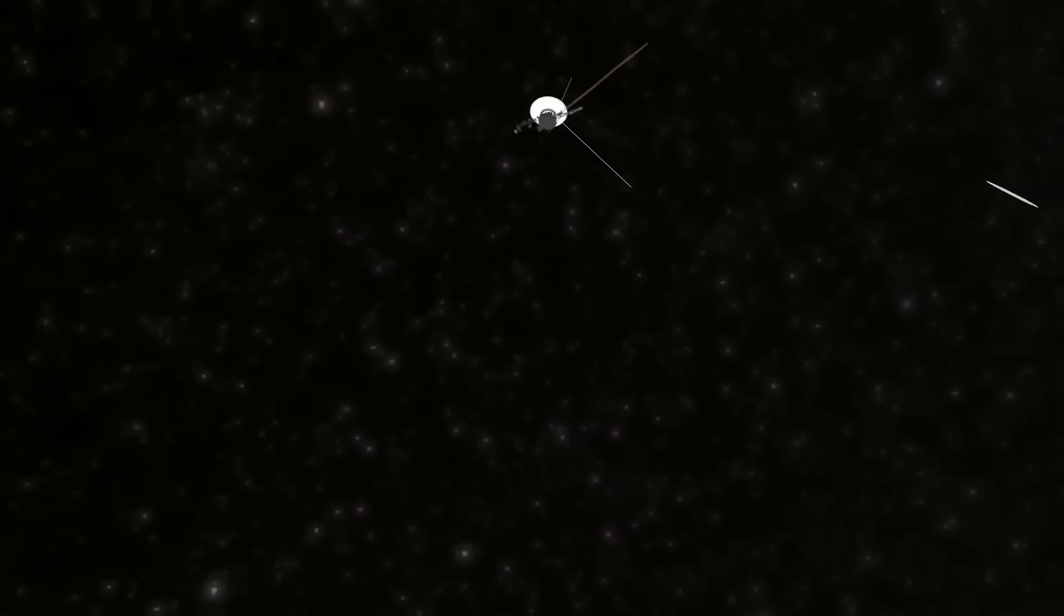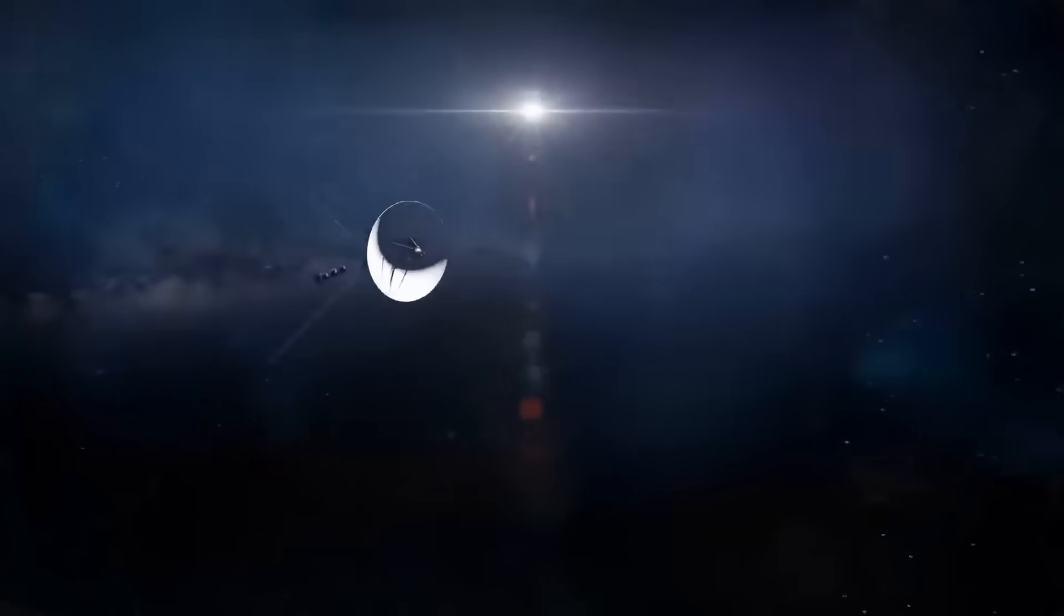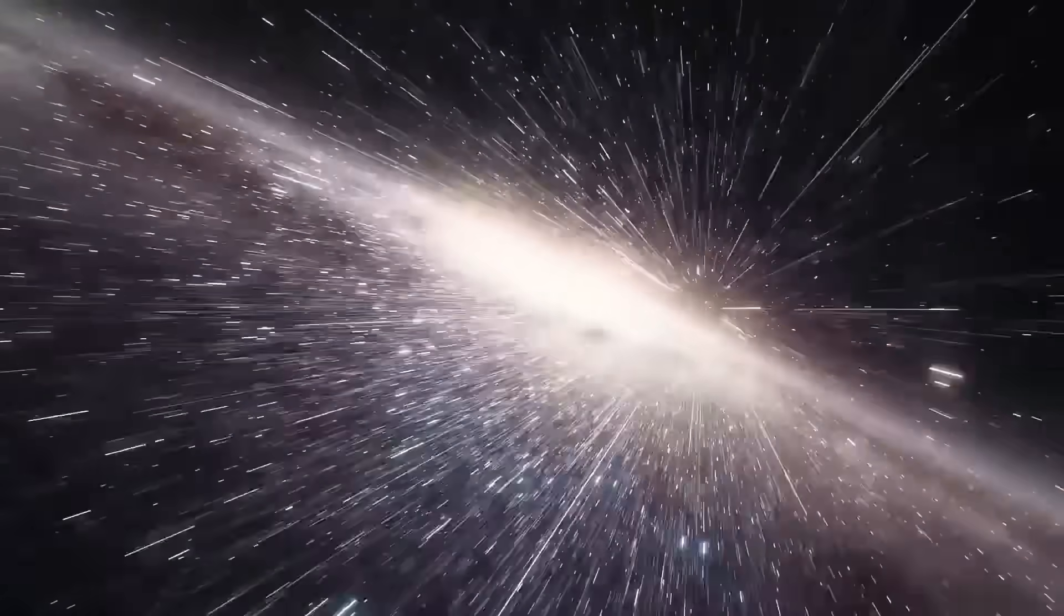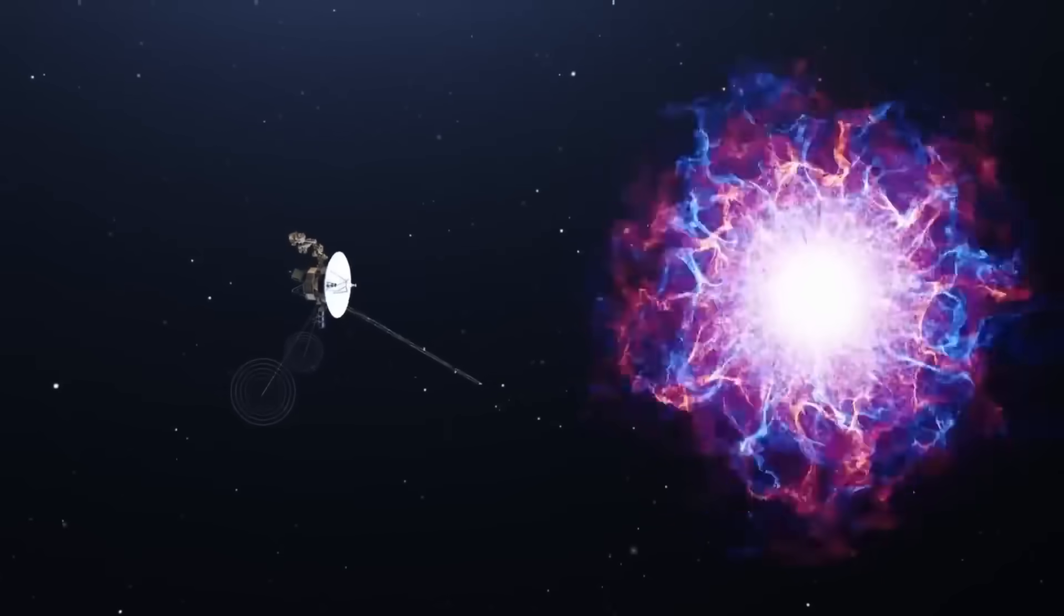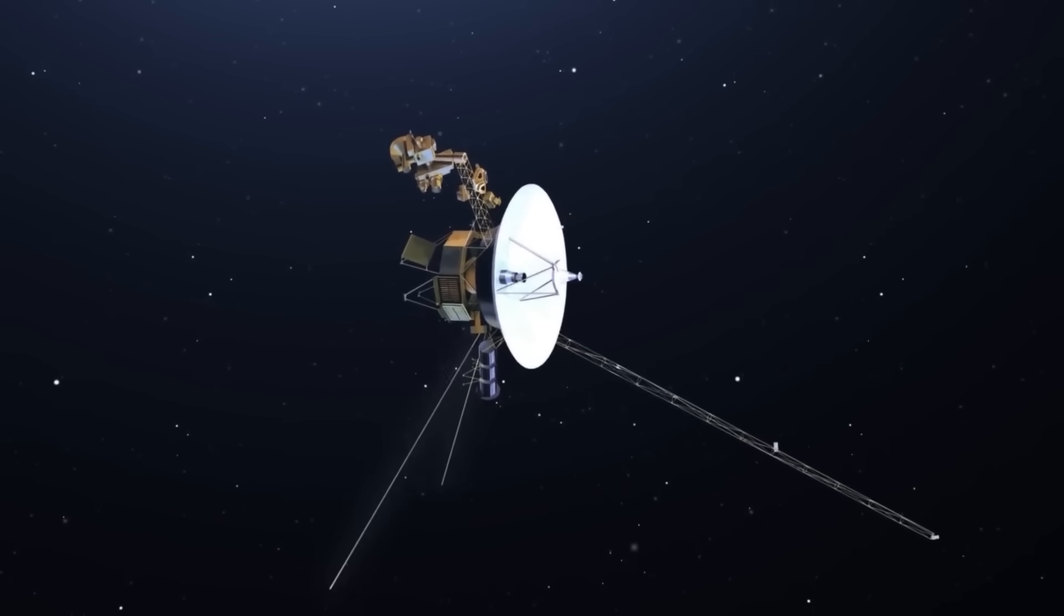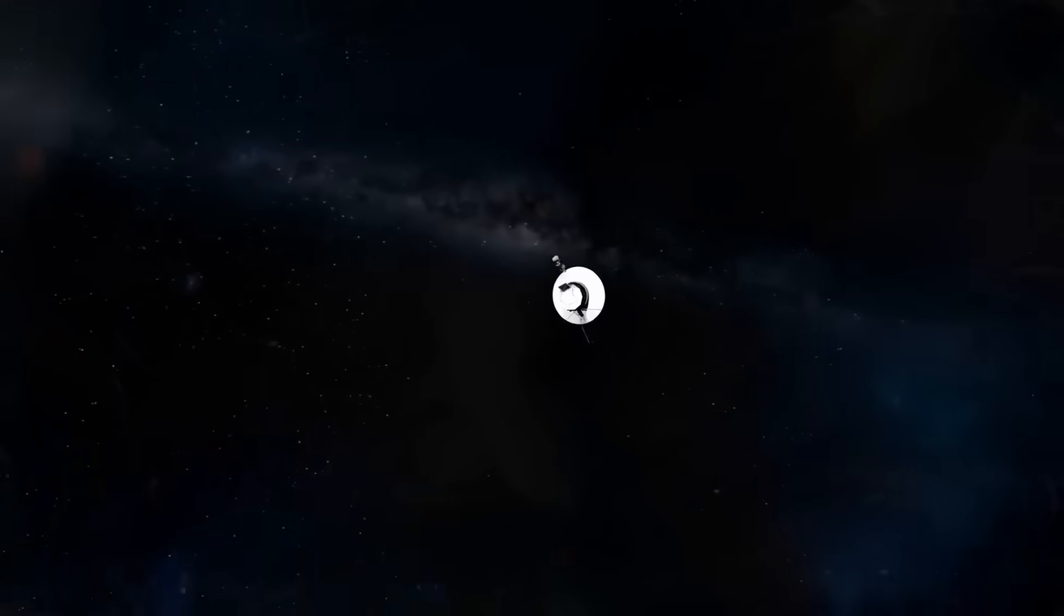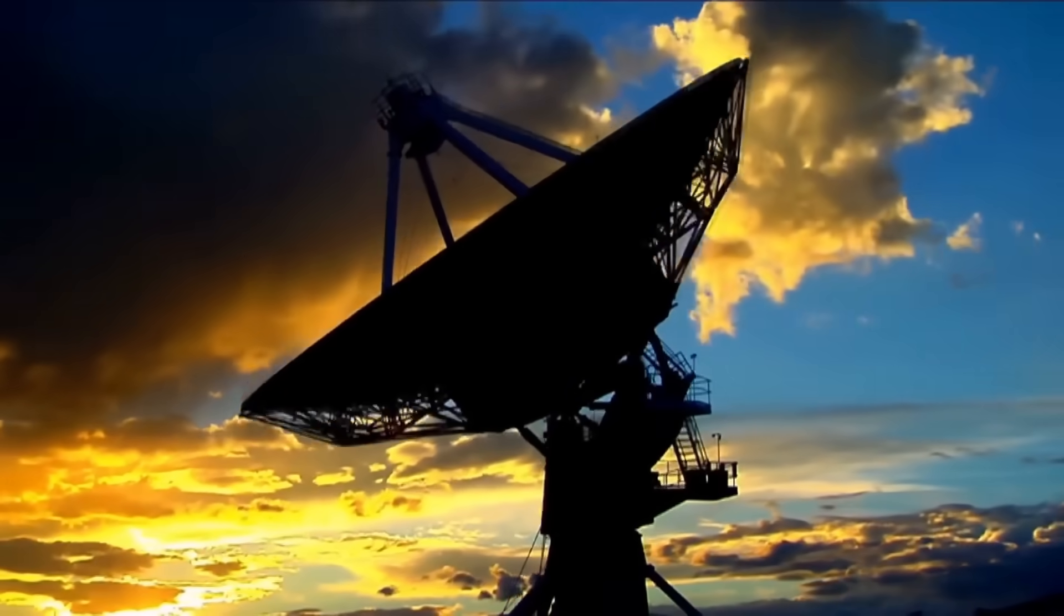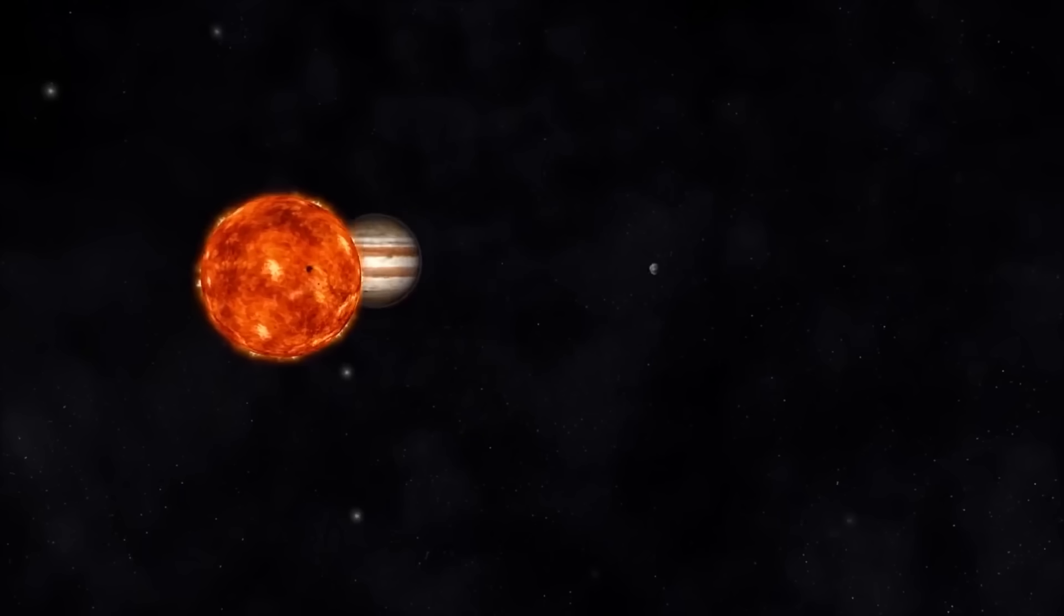Why were these failures happening now, so close together? Voyager 1 had crossed into interstellar space in 2012. It had survived extreme radiation, temperature drops, and aging for over a decade past that point. But suddenly, nearly 47 years after launch, it was breaking down in odd and unpredictable ways. Not crashing, not burning out—but forgetting, confusing its systems, speaking gibberish, then going silent. And always doing so just when it seemed like it was trying to tell us something new.